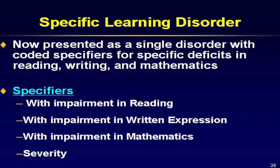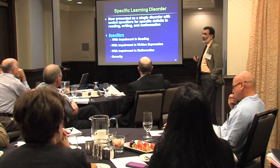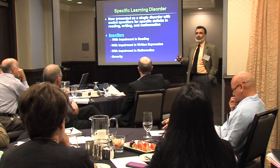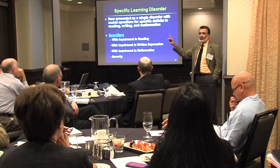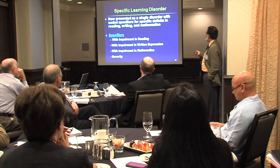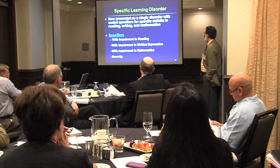In DSM-IV, specific learning disorders were listed separately — mathematics disorder, dyscalculia, and so on. What was realized is that many children had more significant problems in one area but also significant learning difficulties in multiple areas. If diagnosed only with dyscalculia, those other problems were ignored. Now, specific learning disorder is presented as a single disorder with coded specifiers for the specific deficits.